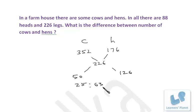The difference between the two is 38. If you are asked about the number of cows, that will be 25. The number of hens, that will be 63.